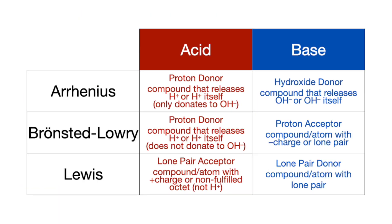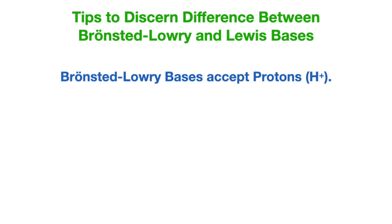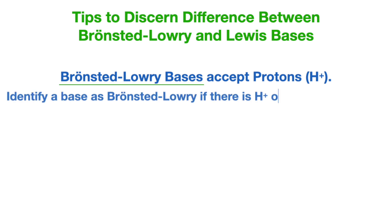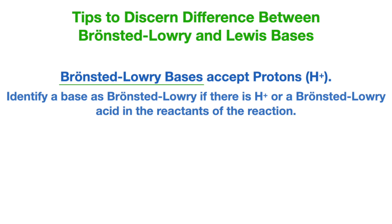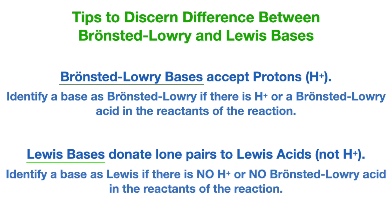Another confusion is the difference between Bronsted-Lowry and Lewis bases. A Bronsted-Lowry base is a proton acceptor, whereas a Lewis base is a lone pair donor. The main question I get is: if a Lewis base is a lone pair donor, couldn't it also technically donate to a proton? The short answer is no. A Bronsted-Lowry base is a proton acceptor, so only identify a base as Bronsted-Lowry if there is a proton in the reactants. A Lewis base donates lone pairs to Lewis acids, not to protons, so identify a base as Lewis if there is no proton in the reactants.